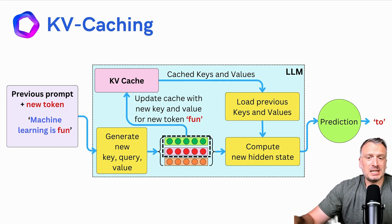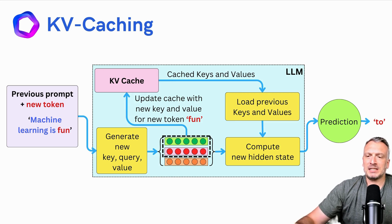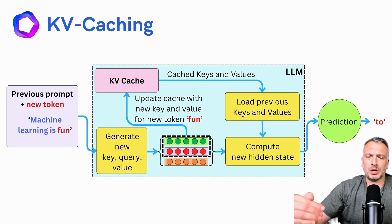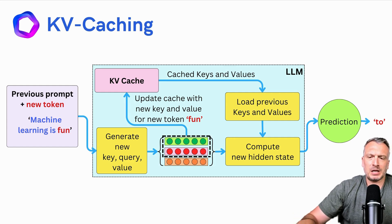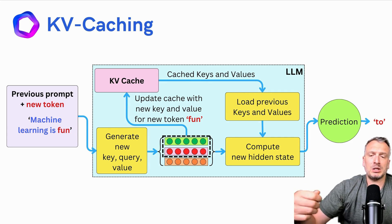By caching the keys and values, we save a lot of computation and the decoding process becomes much faster. We typically have two phases in the KV caching process. We have the generation phase where we compute the keys, values, and queries for the initial prompt sent to the LLM — in this phase we populate the KV cache. Then we have the decoding phase where we utilize what is within the KV cache to continue the decoding process.